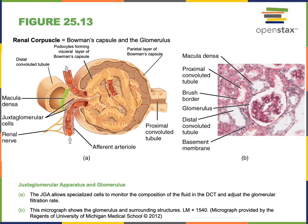The renal corpuscle is Bowman's capsule and the glomerulus. The illustration on the left shows the renal corpuscle and the adjacent structures of the proximal and distal convoluted tubule, as well as the afferent and efferent arterioles. Filtration occurs at the renal corpuscle when liquid is forced out of the blood across the glomerulus into the lumen of Bowman's capsule.